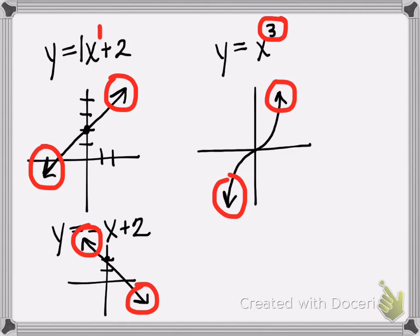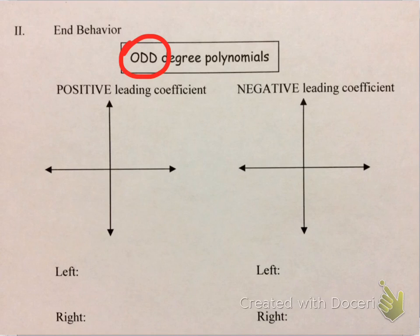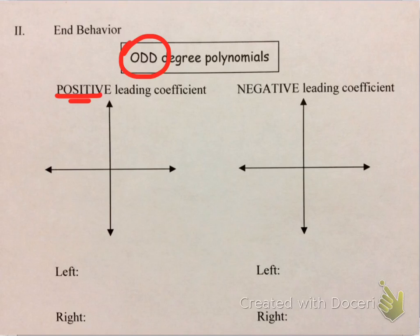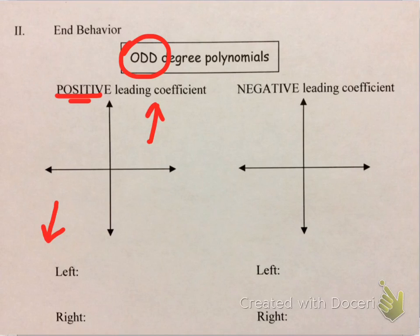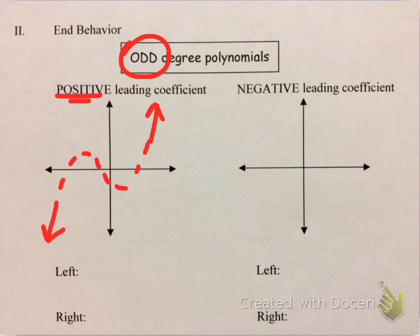These are the patterns we want to capture on this summary document. When we have odd-degree polynomials with a positive leading coefficient, the ends point in opposite directions: the graph starts out pointing down and ends up pointing up. In the middle, we're not sure what it looks like — it could be a straight line or some type of curve — so I'll draw that as a dotted curve, indicating the middle is unknown but the ends will look this way.